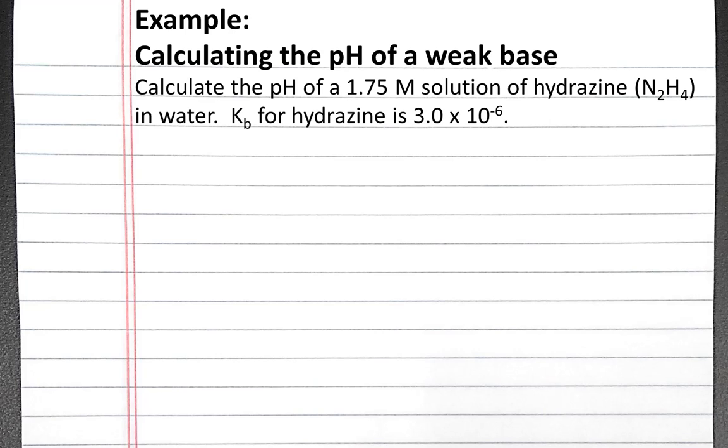Let's work an example problem where we calculate the pH of a weak base solution. We want to know what is the pH of a 1.75 molar solution of hydrazine in water, and Kb for hydrazine is 3 times 10 to the negative sixth.